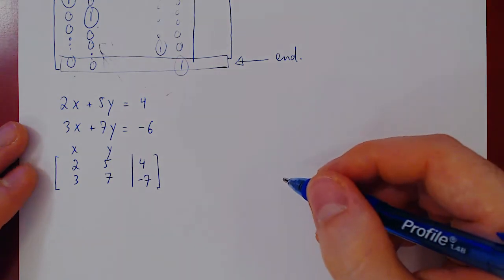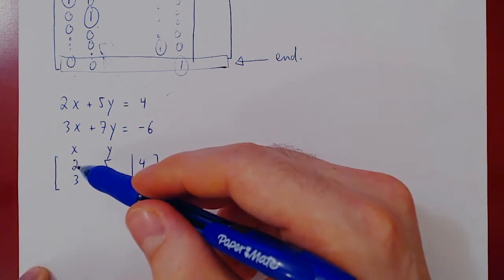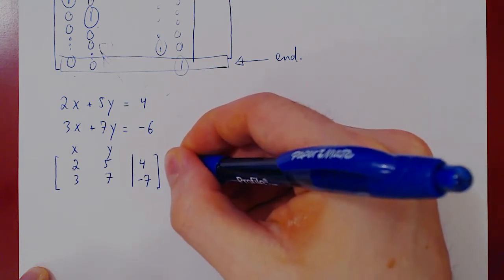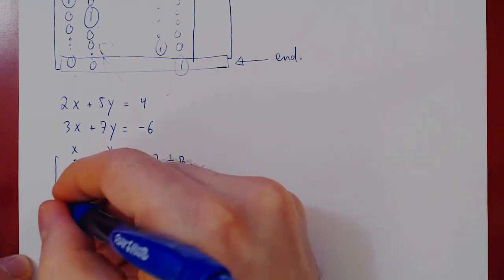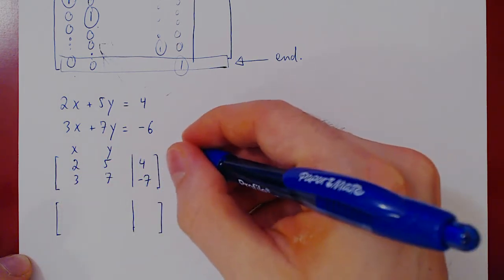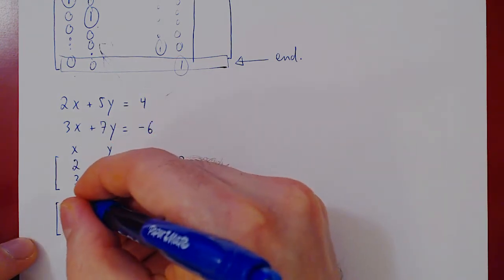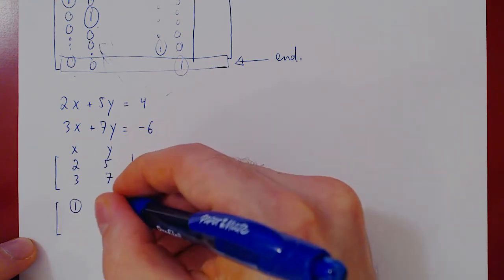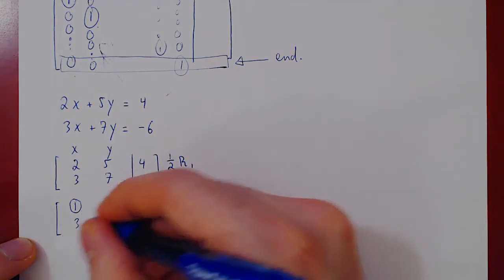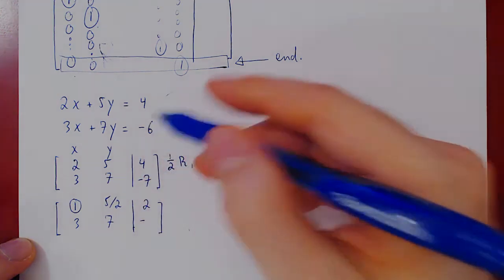Then we apply the algorithm. With the leftmost column, we're trying to get a leading 1 in the top row. This can easily be done if we multiply row 1 by one half. When we multiply a row by a real number, we multiply every entry of the row by that number. So one half times 2 is 1 — this is now a leading 1. One half times 5 is 5/2. One half times 4 is 2. We are not changing row 2, so we recopy it — with negative 6 in the last entry.